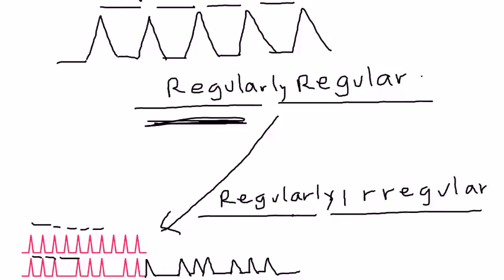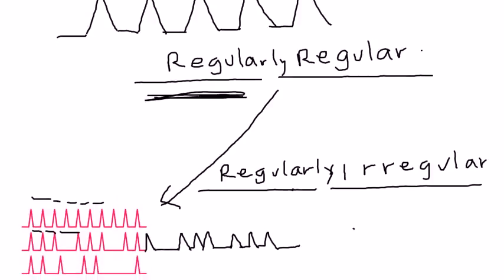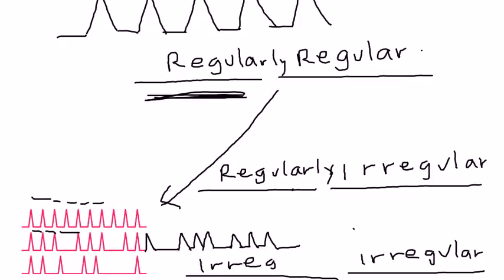Finally, we get to atrial fibrillation. There's no common distance between the QRS complexes, so it's irregular. And there's no common pattern between anything - there's no pattern at all. So it's irregularly irregular. That's basically what that means. Now we can go on with talking about atrial fibrillation.